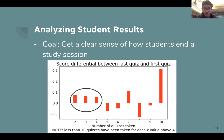Now the next part of the data analysis is trying to analyze student results. And remember those questions that I asked earlier, the main goal is to just get a clear sense of how students ended a study session and when they decided to stop. So one way that we can do that is actually by measuring improvement based on the score differential between the first quiz and the last quiz that they take in a specific concept. So you can see that on the x-axis there's the number of quizzes taken for a specific concept.